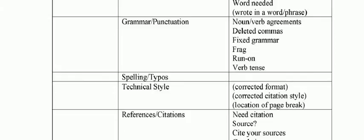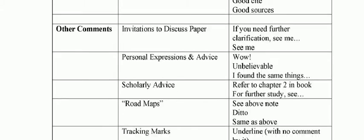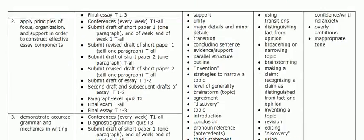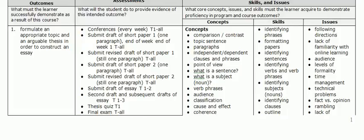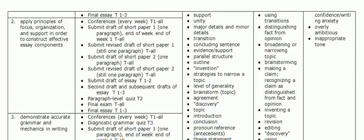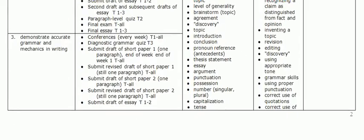They also had a fourth category: other comments — other types of comments the instructor might make on a paper. What we decided to do was take the first three categories — the global, middle, and micro level — and devise our course outcomes based on those categories. The first course outcome for EDCP 103 is a global outcome: formulate an appropriate topic and arguable thesis. The second is a middle level outcome, more at the paragraph level and the support for your claims. The third outcome is a micro level outcome: accurate grammar and mechanics in writing. So we're using the present literature to help inform the course outcomes.